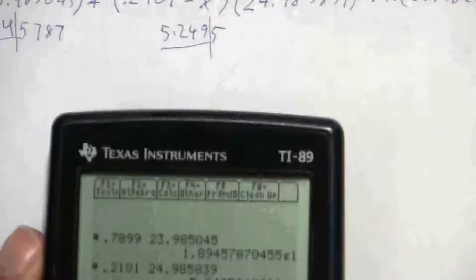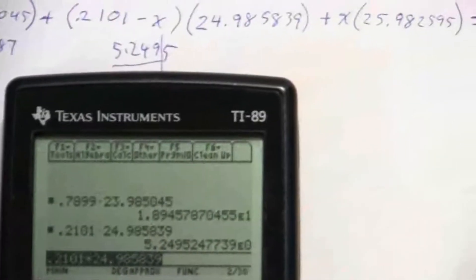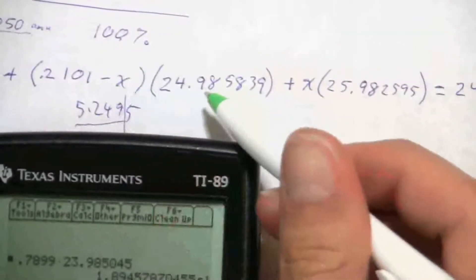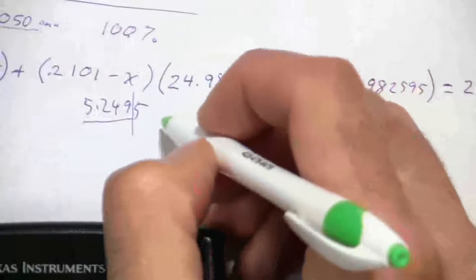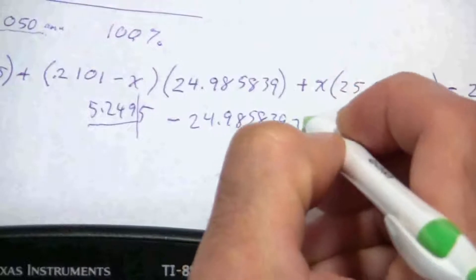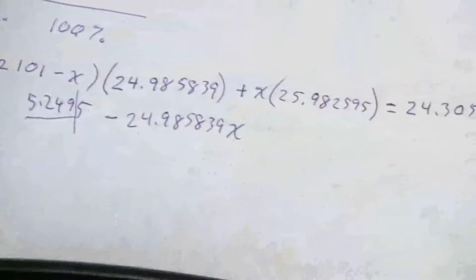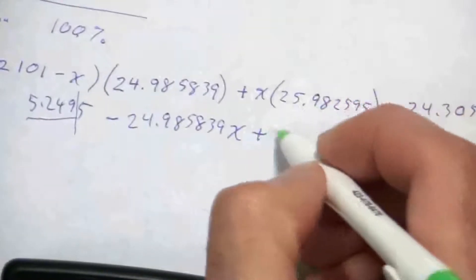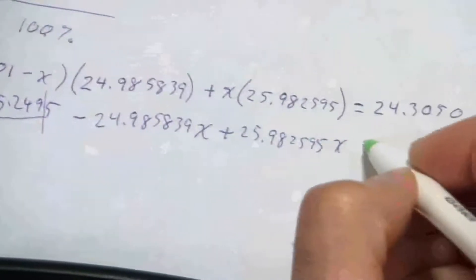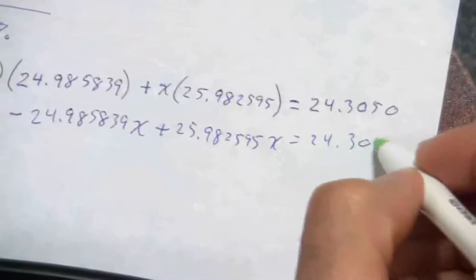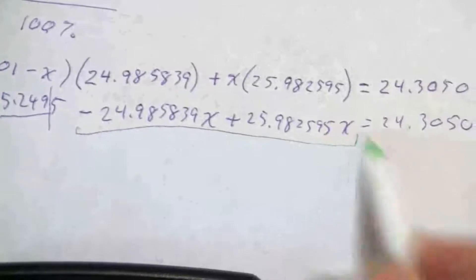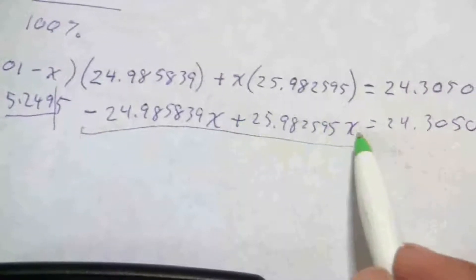All right, so the other part of that, I did the first one. Now it's just negative x times that value there, and so I'm going to have 24.985839 times x. And then here I have plus 25.982595x equals 24.3050. So let me go ahead and combine those terms because they're both x terms.